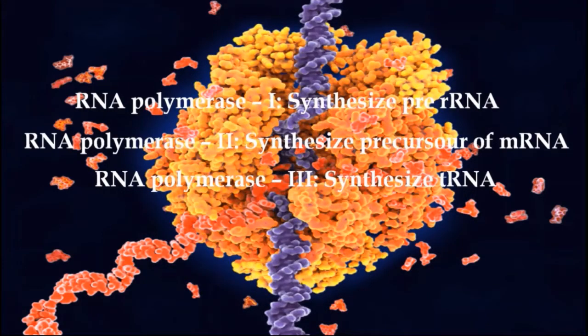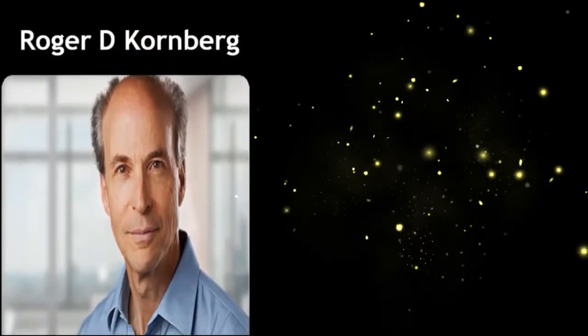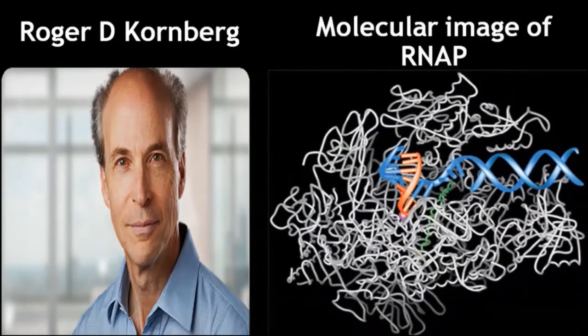RNA polymerase 4 and 5 are found in plants and are less understood. They make siRNA. Roger D. Kornberg created detailed molecular images of RNA polymerase and won the Nobel Prize in 2006.